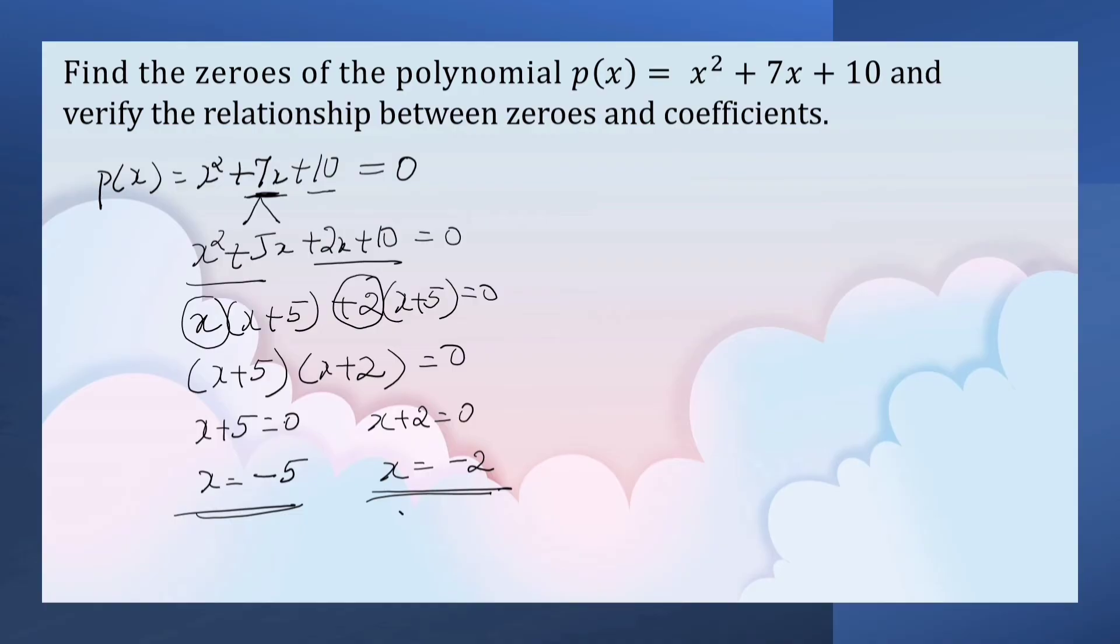Since it is a quadratic polynomial, we get two zeros. If you put these values in this polynomial, we get 0.